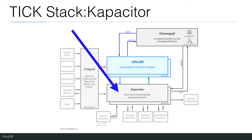Kapacitor is a native data processing engine. It can process both streams and batch data from InfluxDB. It lets you plug in your own custom logic or user-defined functions to process alerts with dynamic thresholds, match patterns from metrics, compute statistical anomalies, and perform specific actions based on these alerts. Kapacitor integrates with HipChat, OpsGenie, Alerta, Sensu, PagerDuty, Slack, and more.